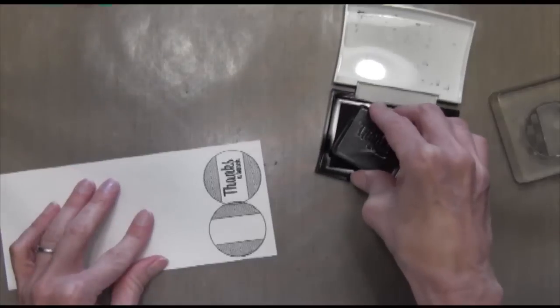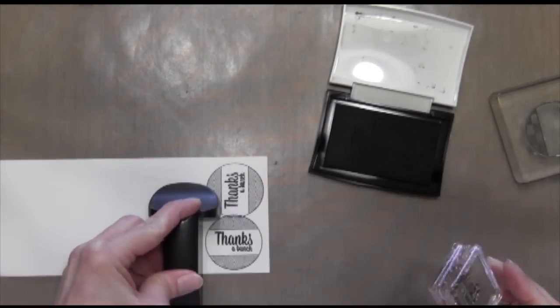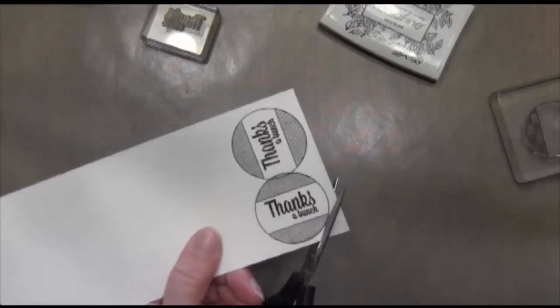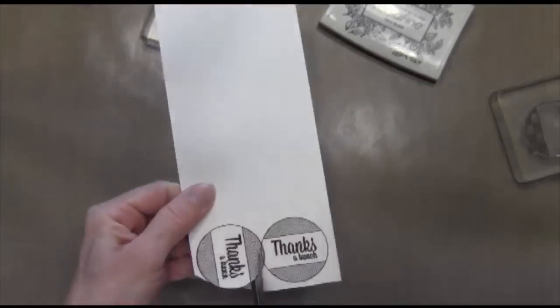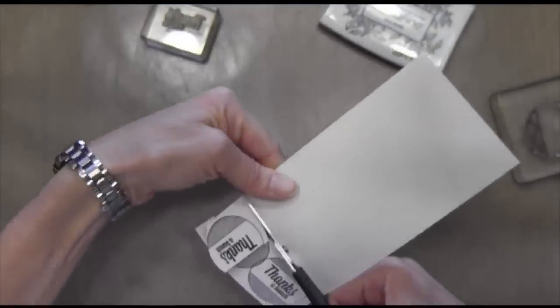This time I'm going to use my stamp-ma-jig and just hold it in place. Once I get it down on the paper I hold it and take it off to determine if I have to stamp it again. I didn't have to in this case, but you would be able to stamp it right on top because you had already lined it up with the stamp-ma-jig.